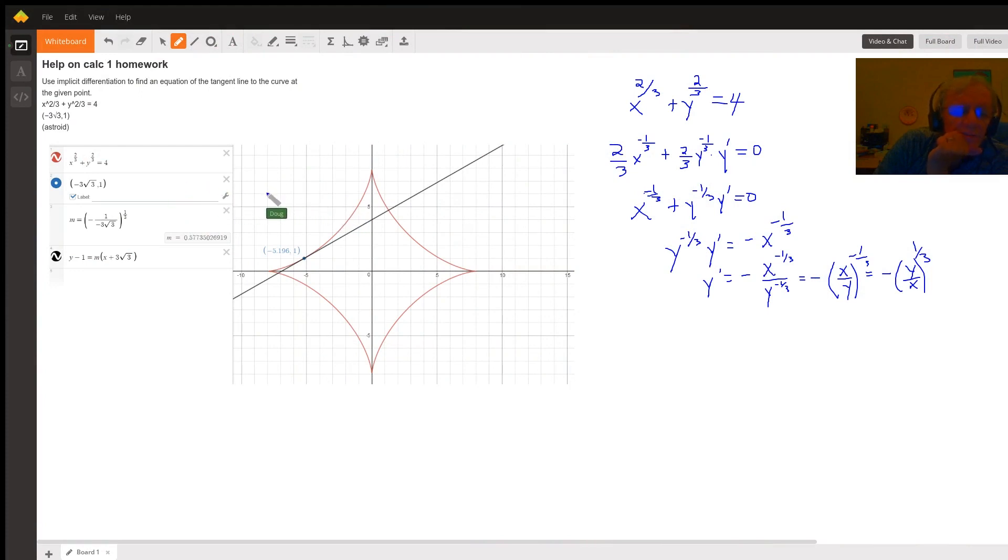I've pulled this picture from Desmos, the Desmos online graphing calculator. I've graphed in red the implicitly defined function x to the two-thirds plus y to the two-thirds equals four. That's the curve that appears in red.